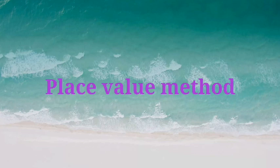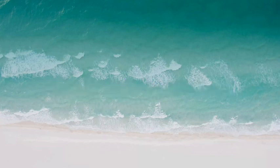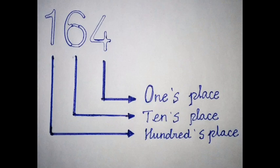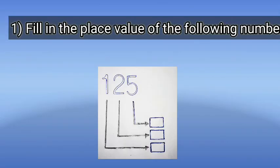Next topic: place value method. Consider the number 164. 4 is in the ones place, 6 is in the tens place, and 1 is in the hundreds place. Tomorrow's homework: fill in the place value of the number 125 — a three-digit number. How many ones, how many tens, how many hundreds? Fill in the empty box.